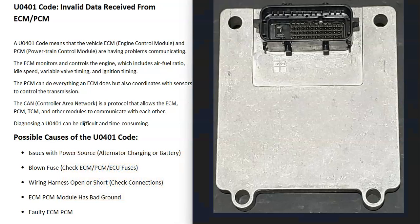What does this mean? Modern vehicles have different computer modules that are controlling different functions inside of a vehicle. They can have an engine control module, which is controlling all the engine functions. They can have a transmission control module, which is controlling all the transmission functions. Some vehicles can have a powertrain control module, which is basically manufacturers moving all the components to one computer instead of multiple. A PCM can do all the things that an ECM can do, but it's also controlling other functions like the transmission.